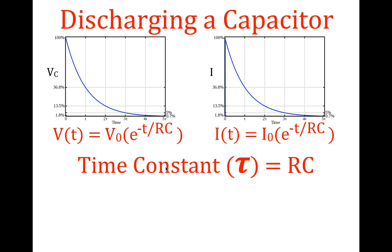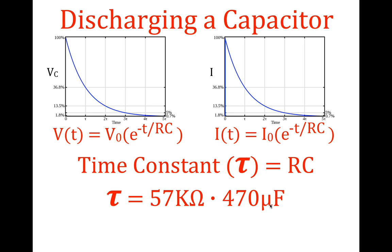For example, with a 57k ohm resistor and a 470 microfarad capacitor, you multiply these two numbers together and you get a time constant of 26.8 seconds — only for that pair of resistor and capacitor. After one time constant, 26.8 seconds, the voltage is reduced to 36.8%. After two time constants, 53.6 seconds, it's reduced to 13.5%. After three time constants, 80.4 seconds, it's reduced to 5% of the initial maximum — and that goes for both the current and the voltage.